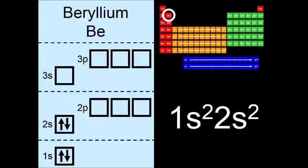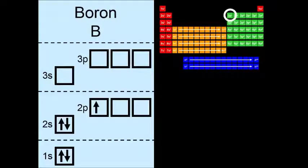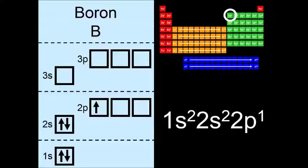Now we move over to boron, and we have to add a p electron into the 2p sublevel. So boron's electron configuration is 1s2 2s2 2p1.